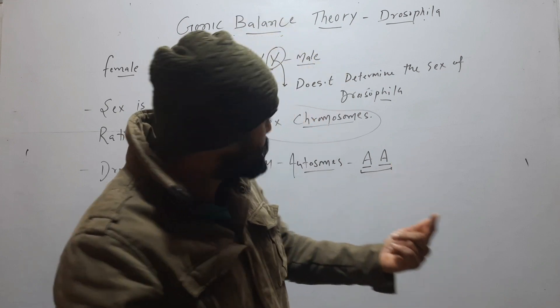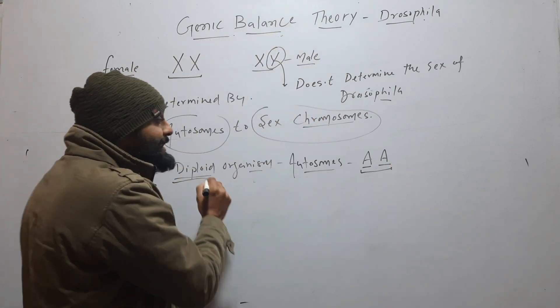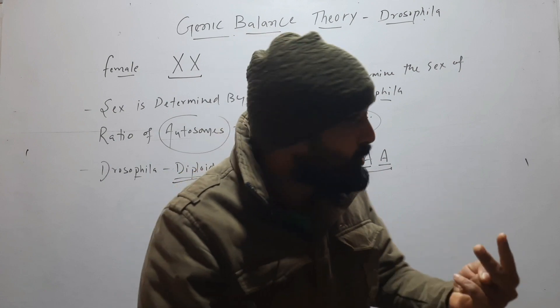If it is haploid, then it have one pair. If it is diploid, then it have two pair of autosomes.